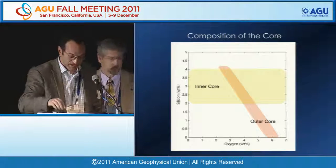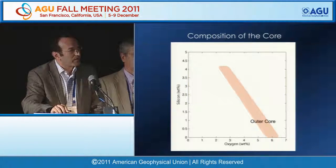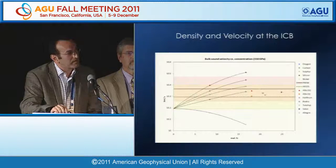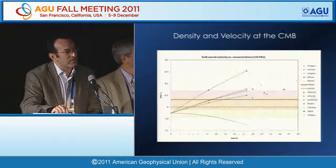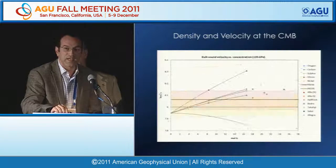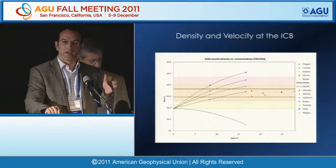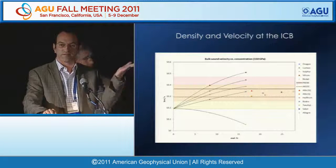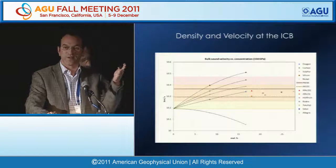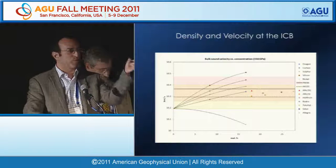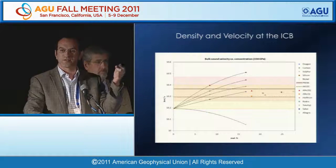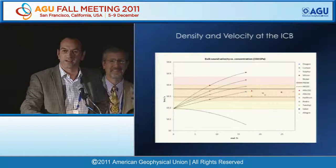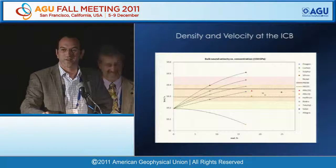Regarding questions about the calculations: we have functional forms allowing us to calculate density and velocity for any composition. Taking one questioner's data and plugging it in, it fits within our data. Our data supports their calculations, though for some reason we don't reach the same conclusion—something to discuss further. The approach covers iron-sulfur-oxygen samples within error bars.